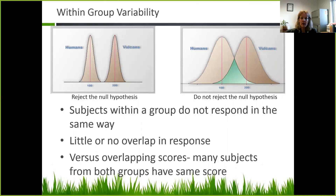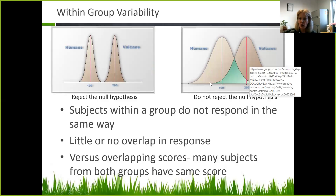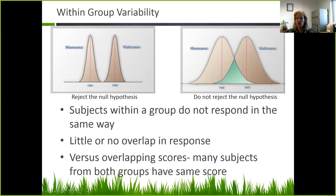We really want to keep in mind within-group variability. When we consider how we reject or do not reject the null hypothesis, we remember that subjects within a group do not respond in the same way. If there's little or no overlap in response, we reject the null hypothesis. But if there are overlapping scores — many subjects from both groups having the same score — then we do not reject the null hypothesis.